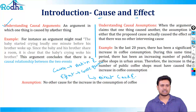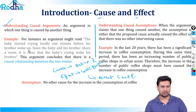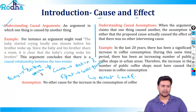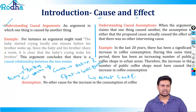Let's understand what we mean by causal arguments — an argument in which one thing is caused by another. For instance, an argument might read: the baby started crying loudly one minute before his brother woke up. Since the baby and his brother share a room, it is clear that the baby's crying woke his brother. This argument concludes there is a causal relationship between the two events: the baby crying leads to the brother waking up. This type of argument where one action leads to another is called a causal argument.